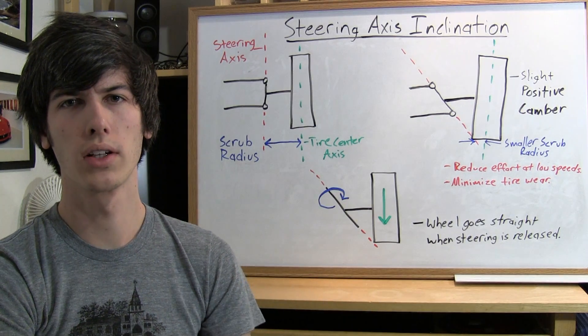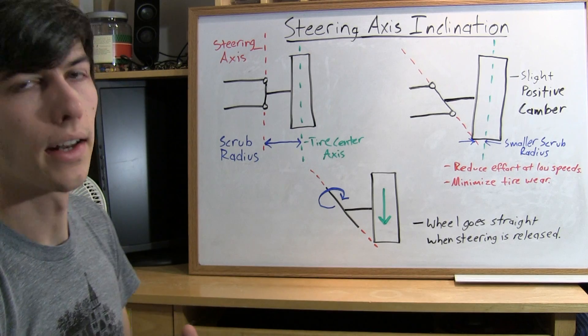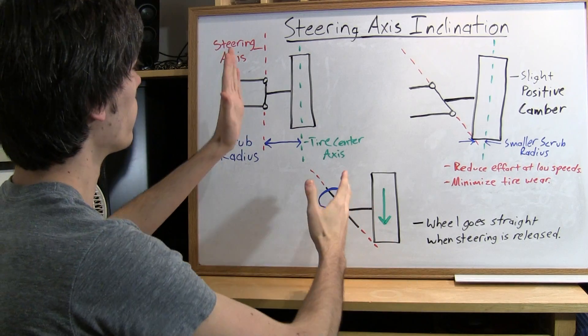The next segment on wheel alignment I want to talk about is the steering axis. Now the steering axis is pretty important.